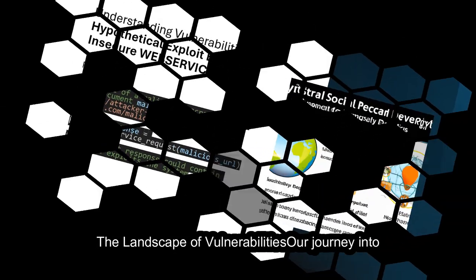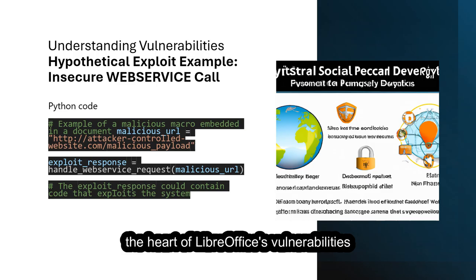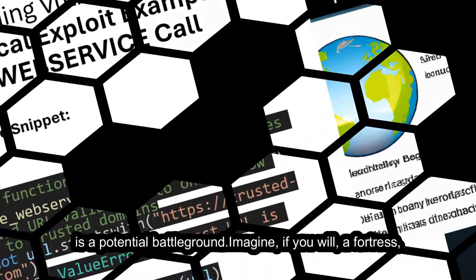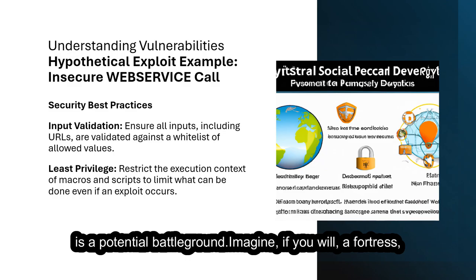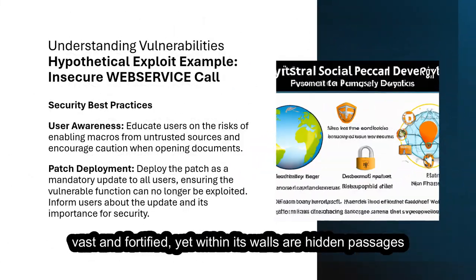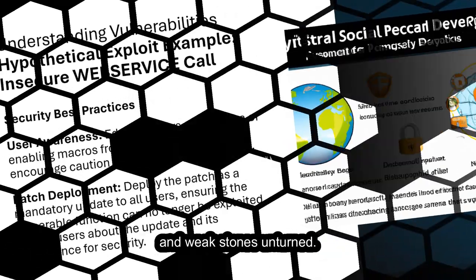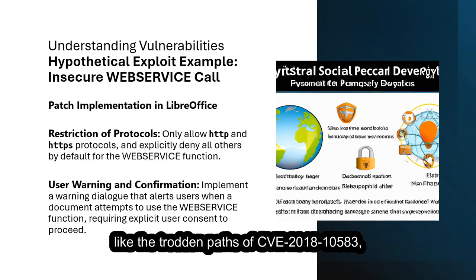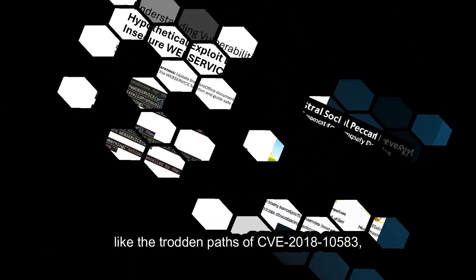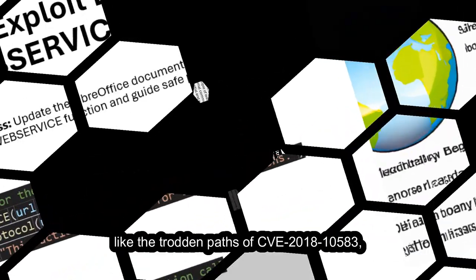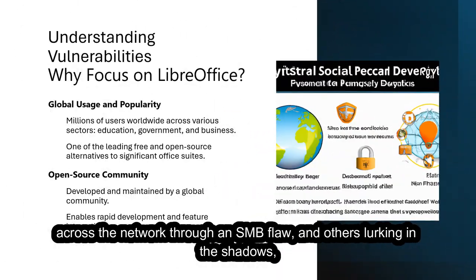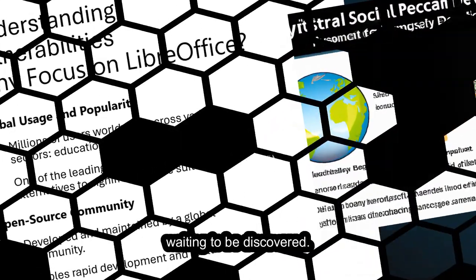Our journey into the heart of LibreOffice vulnerabilities unveils a complex landscape where every feature, every line of code, is a potential battleground. Imagine a fortress, vast and fortified, yet within its walls are hidden passages and weak stones unturned. These are the vulnerabilities — some known, like the trodden paths of CVE-2018-10583, allowing attackers to whisper secrets across the network through an SMB flaw — and others lurking in the shadows, waiting to be discovered.